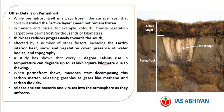While permafrost itself is always frozen, the surface layer that covers it — called the active layer — need not remain frozen. In Canada and Russia, for example, colorful tundra vegetation carpets over permafrost for thousands of kilometers. The thickness reduces progressively towards the south. Permafrost is affected by a number of factors including Earth's interior heat, snow and vegetation cover, presence of water bodies, and topography.